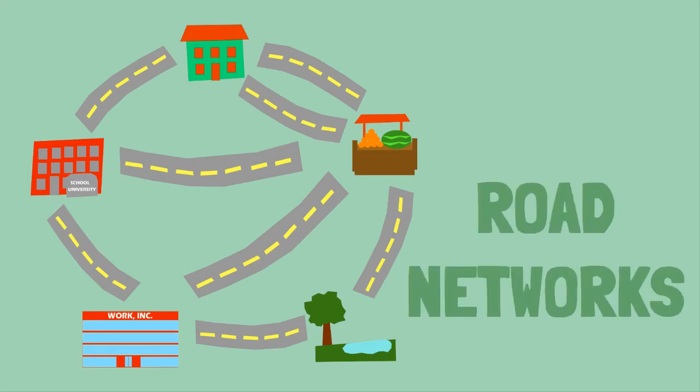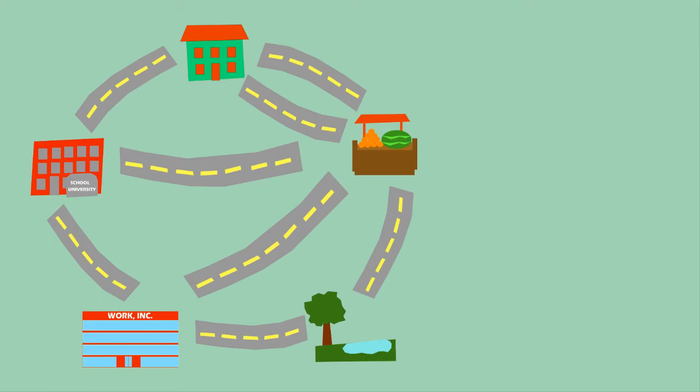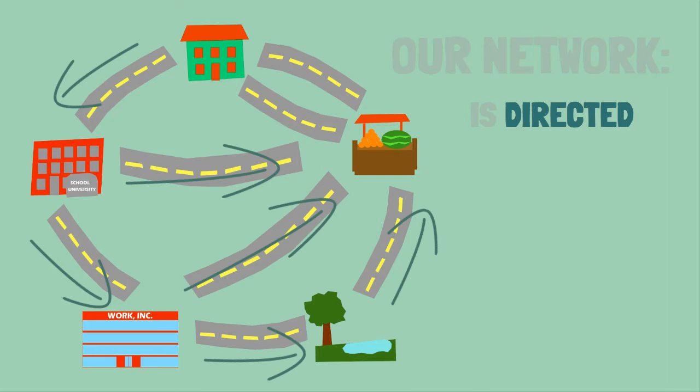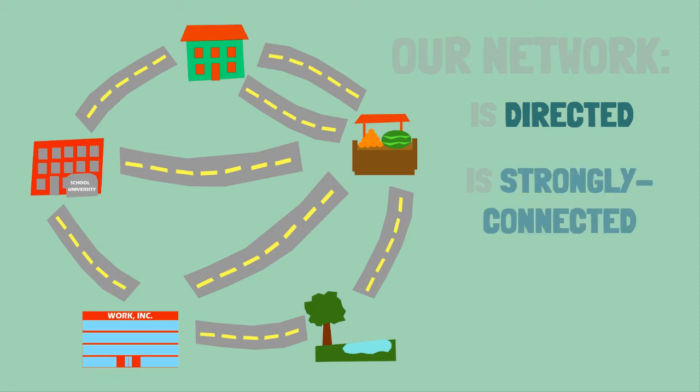We'll discuss a few further important points about our network. Our network is directed, which means these nodes are connected with links that have directions. For example, this link goes this way, that link goes that way. Each one could represent one-way roads, or two together would be a two-way road. Our road network is also strongly connected. That is, you can get to any other node from any starting node, and you can also go back home.